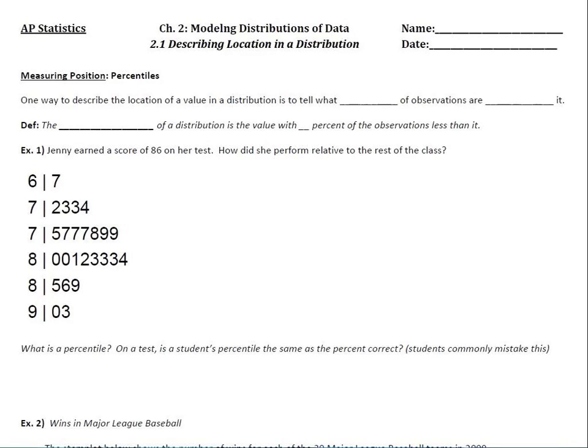One way to describe the location of a value in a distribution is to tell what percent of observations are less than it. So the definition, the pth percentile, and that could be the 50th percentile, the 75th percentile. The pth percentile of a distribution is the value with p percent of the observations less than it.